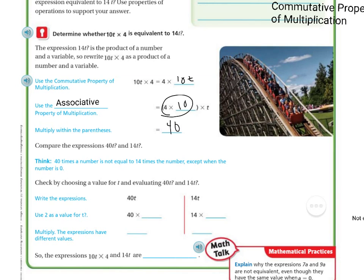So, if we compare the expression 40T and 14T, we've got to think. 40 times the number, that's not equal to 14 times the number, except when the number is 0. To check by choosing a value for T and evaluating 40T and 14T, you're going to write the expressions.